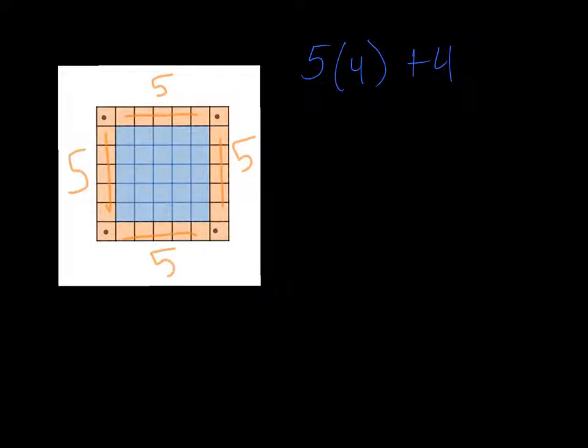What we wanted to do then is after we figure out how many tiles we would need, 5 times 4 is 20 plus 4 gives you 24 tiles, is to generalize that and say how can we come up with an expression that we're going to use every single time. And in this case we're going to use the variable r to represent the length of the side of a pool.